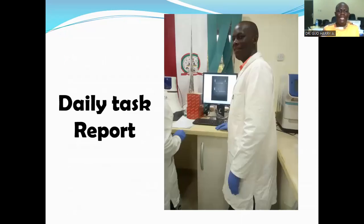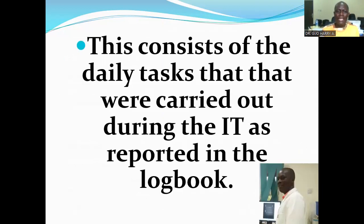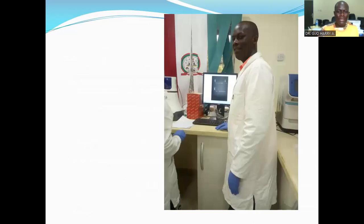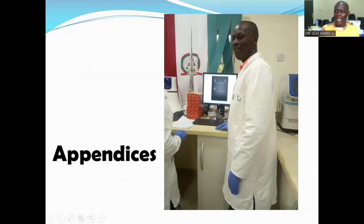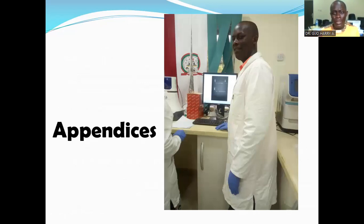The daily task report is one of the final parts of the IT report. It consists of the daily tasks carried out during the IT as reported in the logbook — you are expected to type what you did each day. This is optional depending on the recommendation of the industrial training coordinator of your department. If it is expected, it should be written after the references.